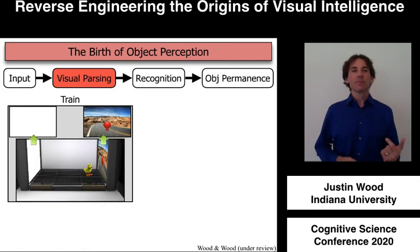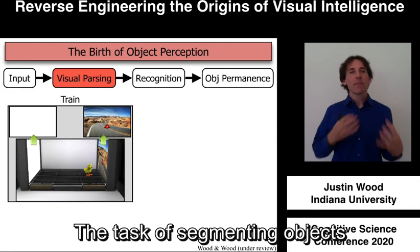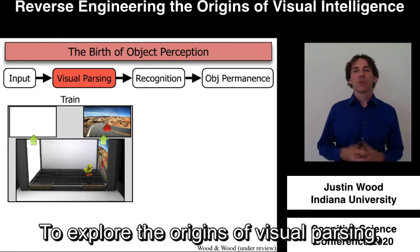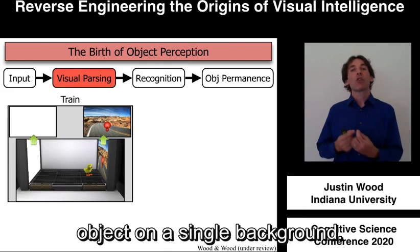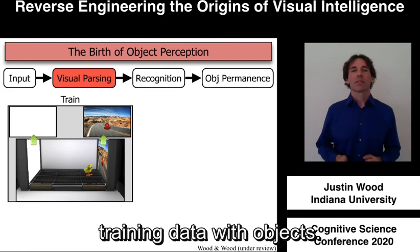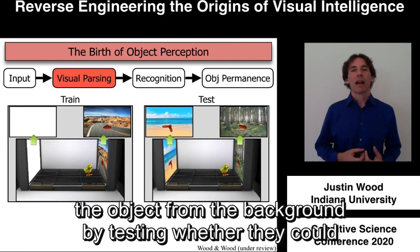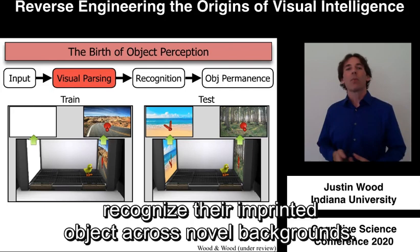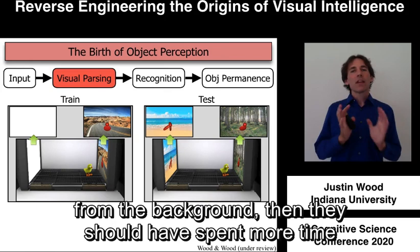The first step of object perception is visual parsing — the task of segmenting objects from complex natural backgrounds. To explore the origins of visual parsing, we raised chicks in an environment containing a single object on a single background, so this was the entirety of the chicks' training data with objects. We then tested whether the chicks successfully parsed the object from the background by testing whether they could recognize their imprinted object across novel backgrounds. If the chicks successfully parsed the object, they should have spent more time on the side of the chamber with their imprinted object versus a novel object.